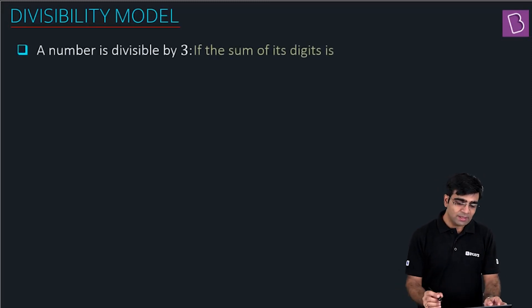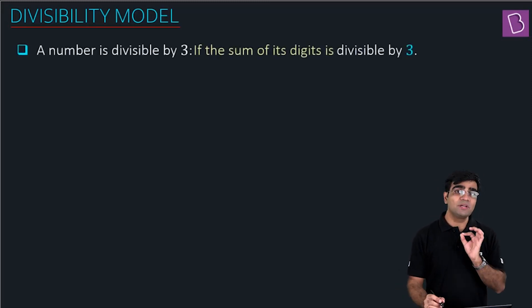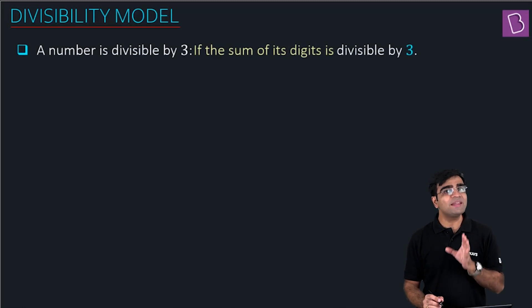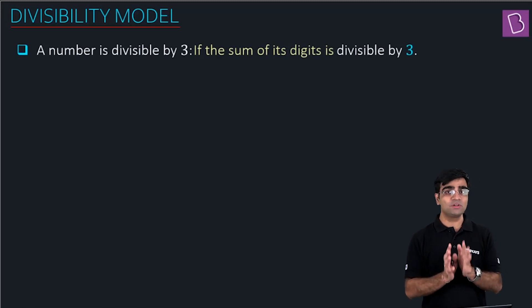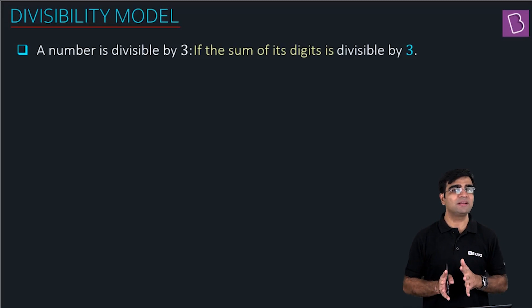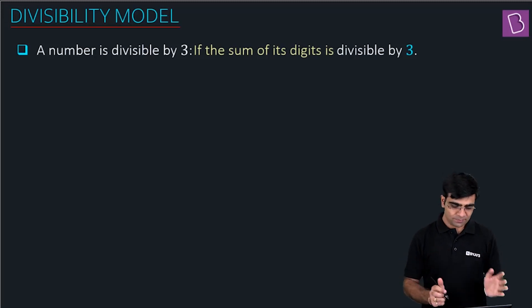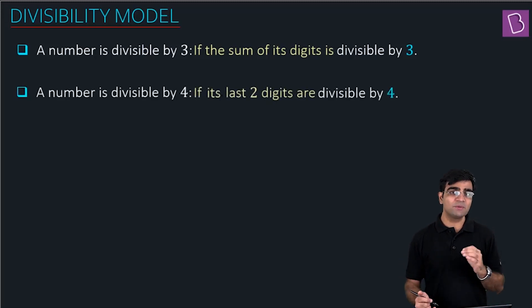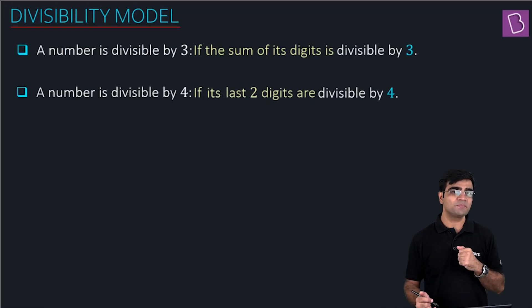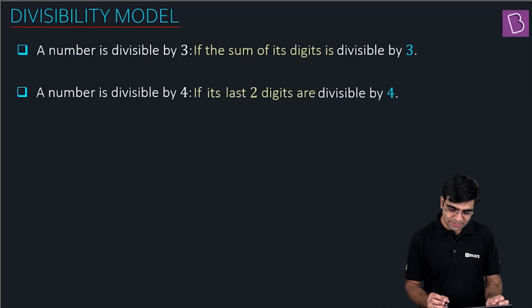A number is said to be divisible by 3 if the sum of all its digits is divisible by 3. A number is divisible by 4 if the last two digits of the number are divisible by 4.